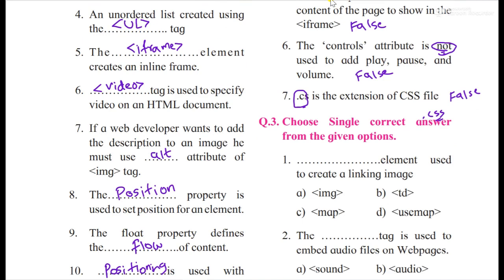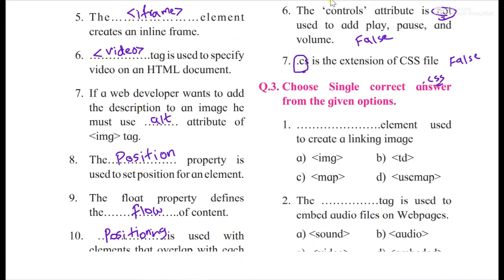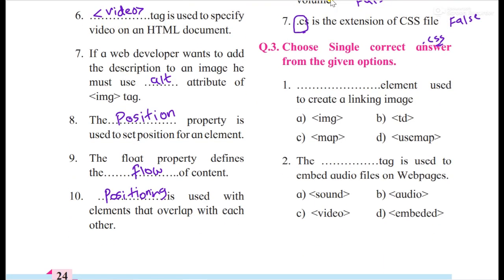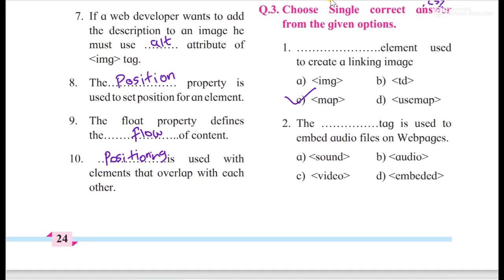So now choose single correct answer from given options. Dash element used to create a linking image, that is map. The dash tag is used, and see, this is an attribute, this is an element, and this is element to add image. This is table data using inside the table row. The dash tag is used to embed audio files. Yes, audio tag.